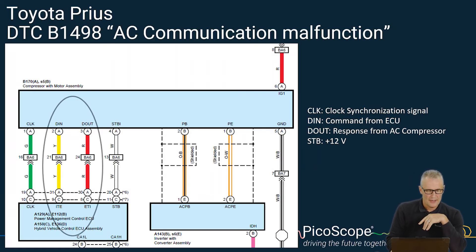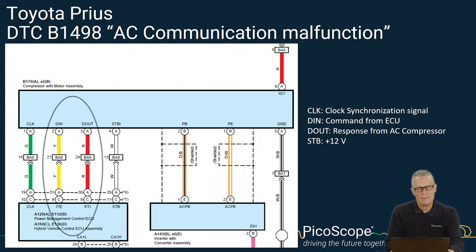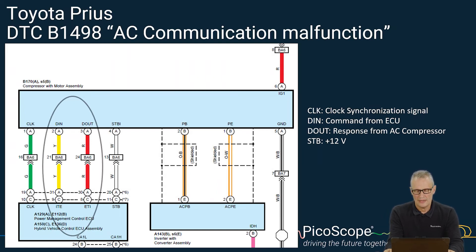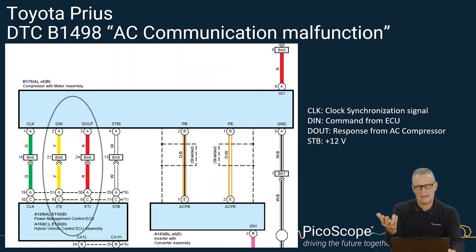Now then, we've got the compressor with motor assembly and we've got the power management control ECU. With four wires we're looking at here: we're looking at a clock synchronisation signal — CLK on the green. We're looking for a DIN command from the ECU, so that's a command from the ECU to the compressor. And then there's DOUT — that's the response from the compressor back to the ECU. And of course there is a supply between the two, that's the STB.